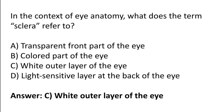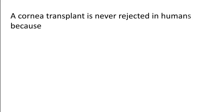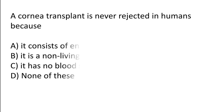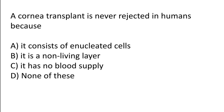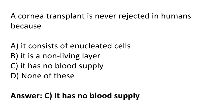In the context of eye anatomy, the term sclera refers to the white outer layer of the eye. A cornea transplant is never rejected in humans because: it consists of enucleated cells, it is a non-living layer, it has no blood supply, or none of these. The correct answer is option C — a cornea transplant is never rejected because it has no blood supply.